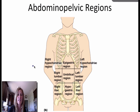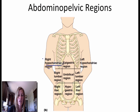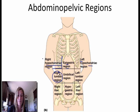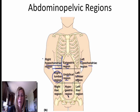If you want to be a little bit more specific, you have the right hypochondriac region, the epigastric region, and the left hypochondriac region. Then the next row down, we have the right lumbar region, the umbilical region, and the left lumbar region. Then the last group: we have the right iliac region, the hypogastric region, and the left iliac region.